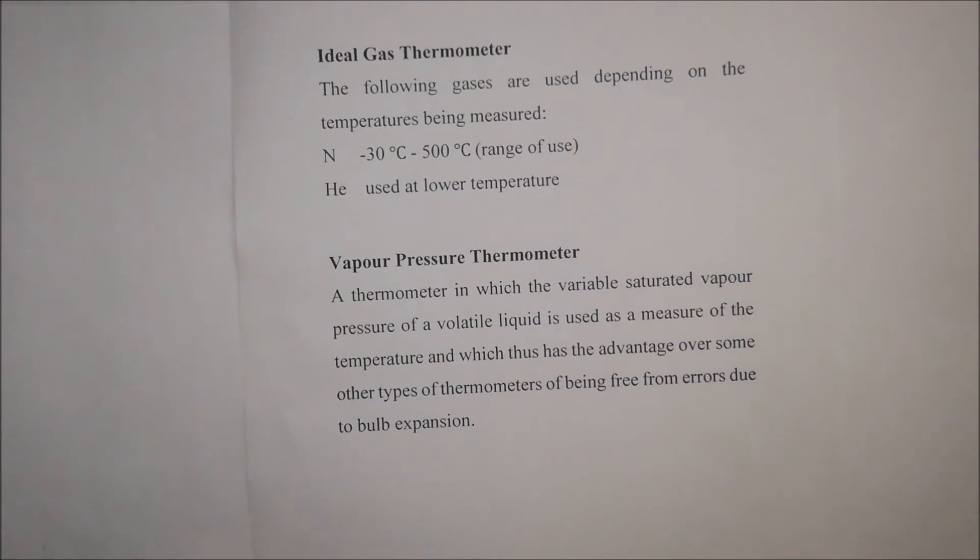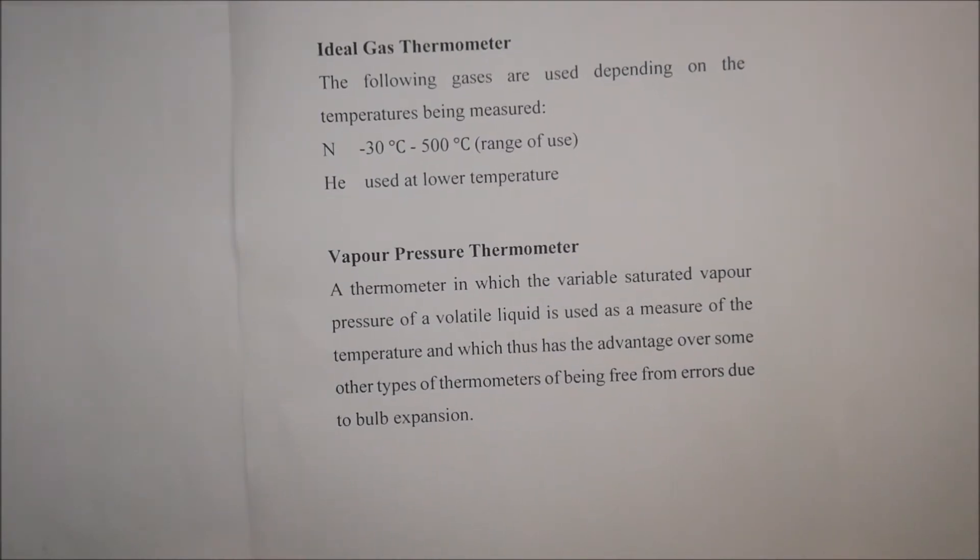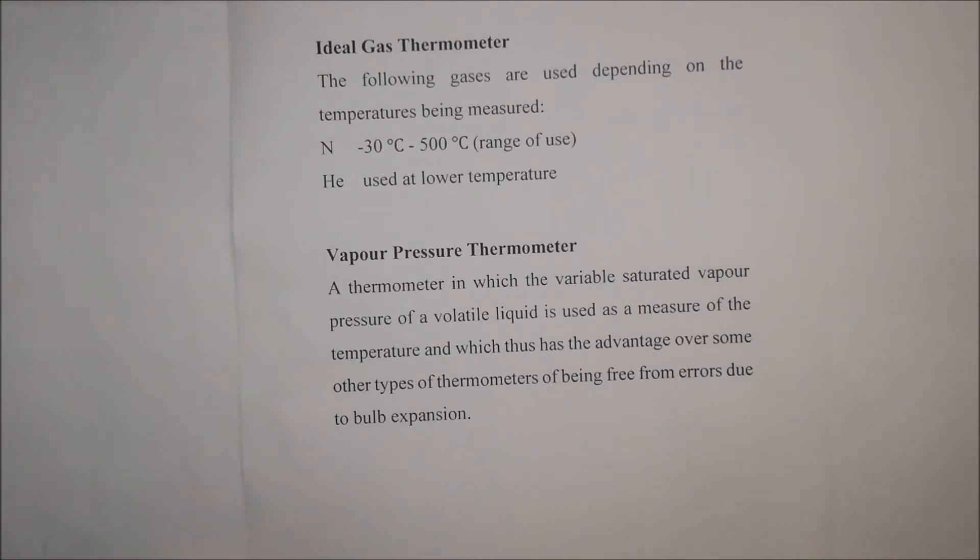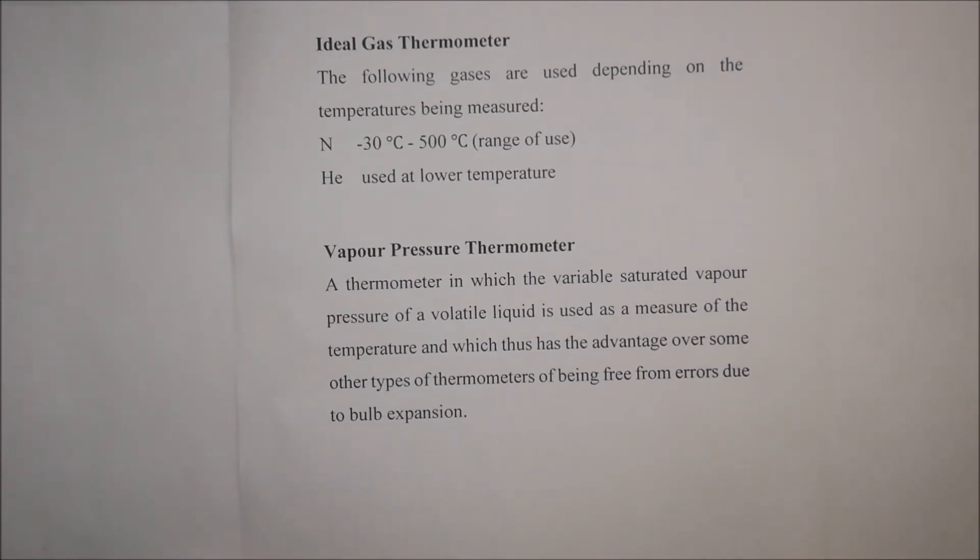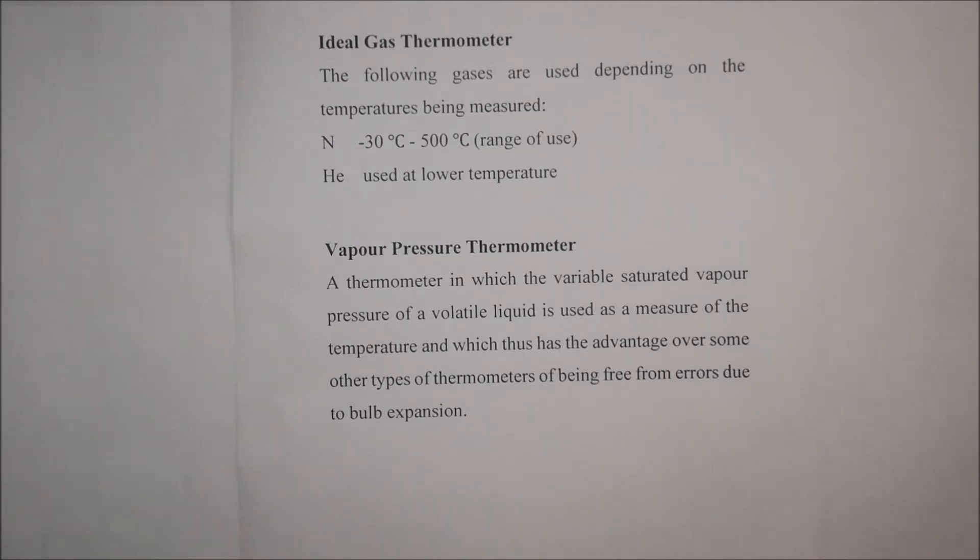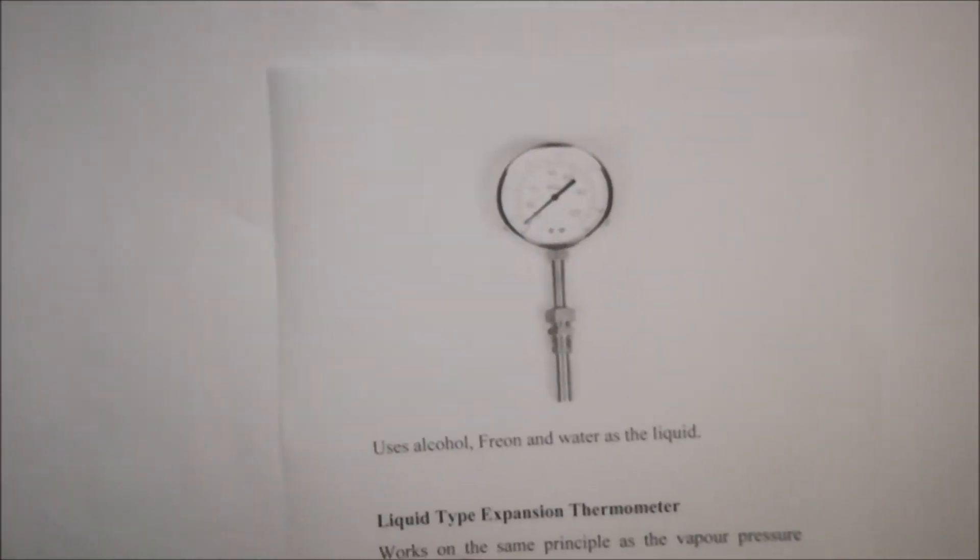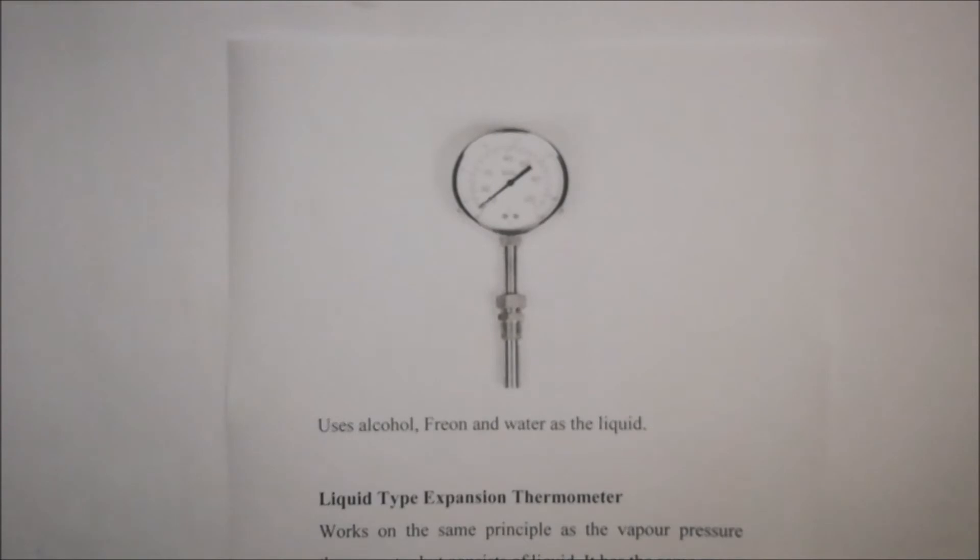You also get vapor pressure thermometers. It's a thermometer in which a variable saturated vapor pressure of a volatile liquid is used as a measure of the temperature and which thus has an advantage of being free from errors due to bulb expansion. You'll perhaps see an example of one of these. These type of analog gauges are being used to measure temperatures, and they use alcohol, freon, and water as a liquid.